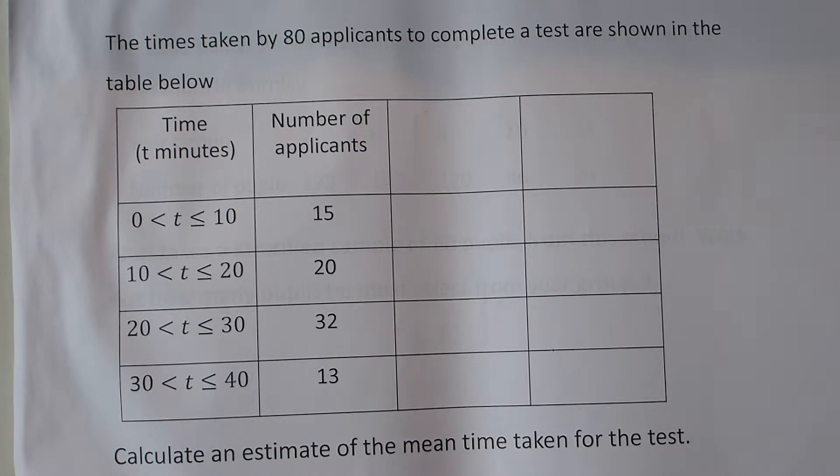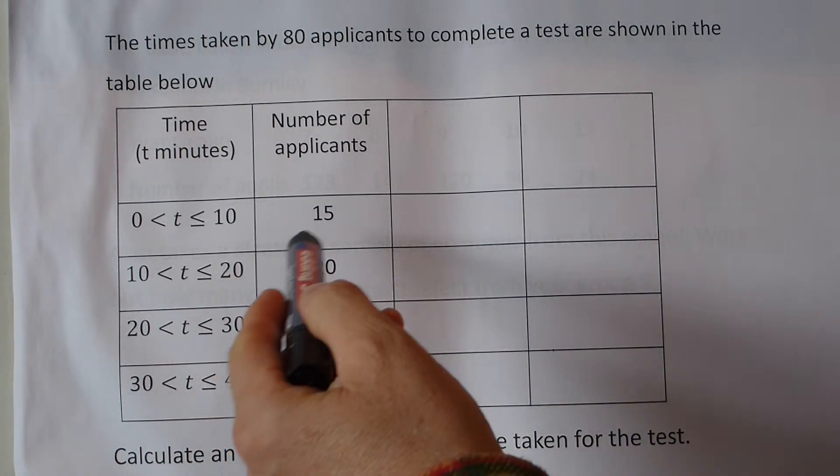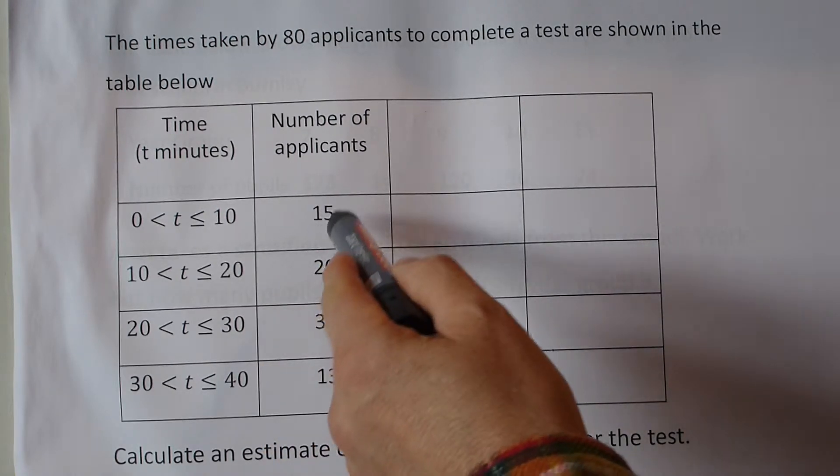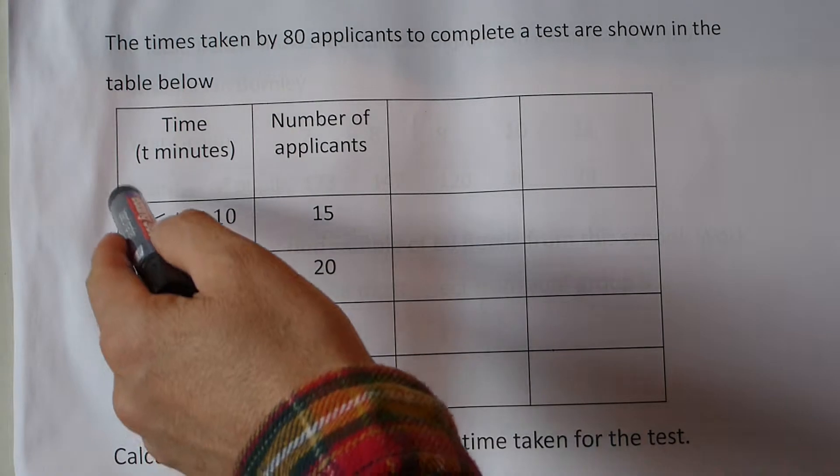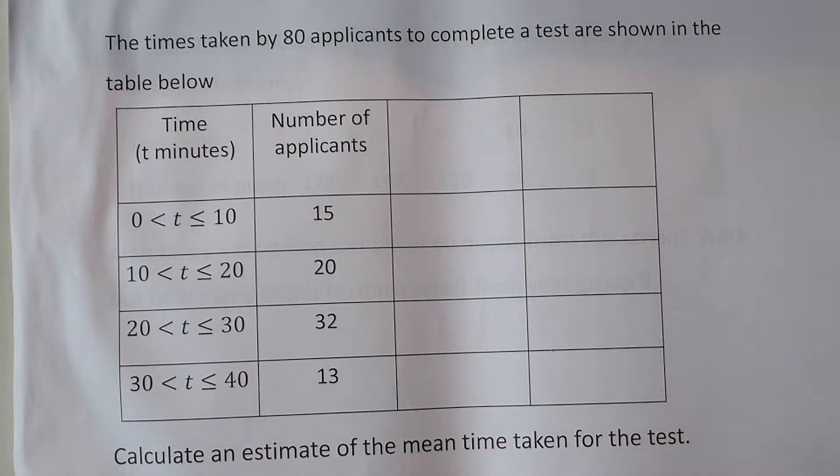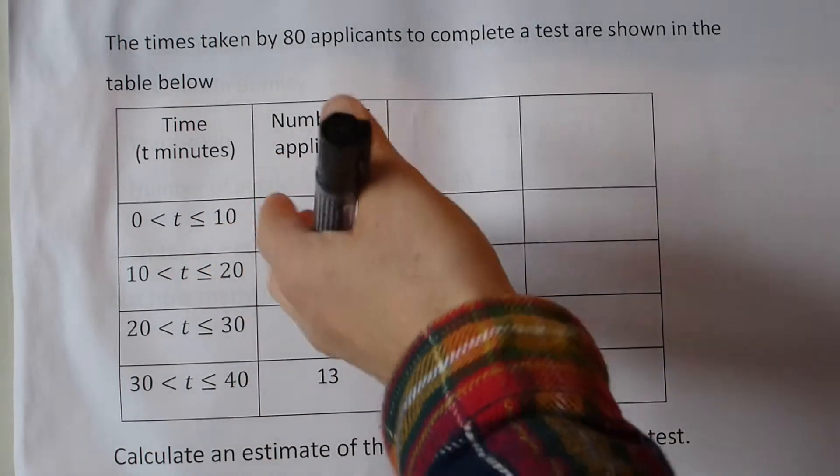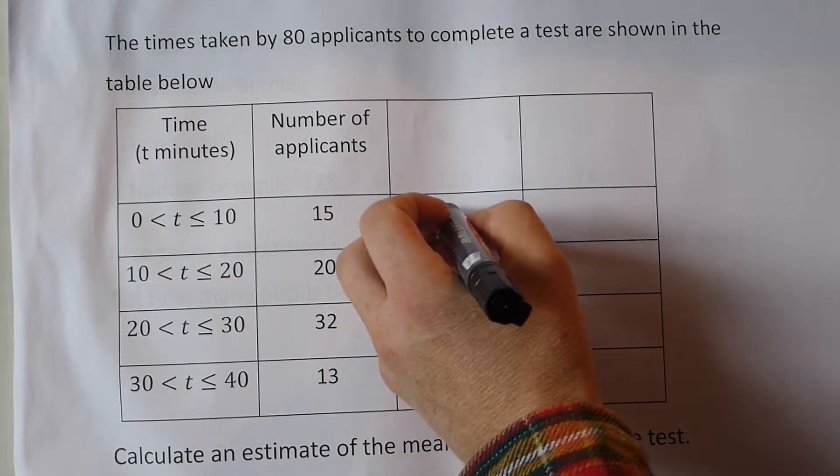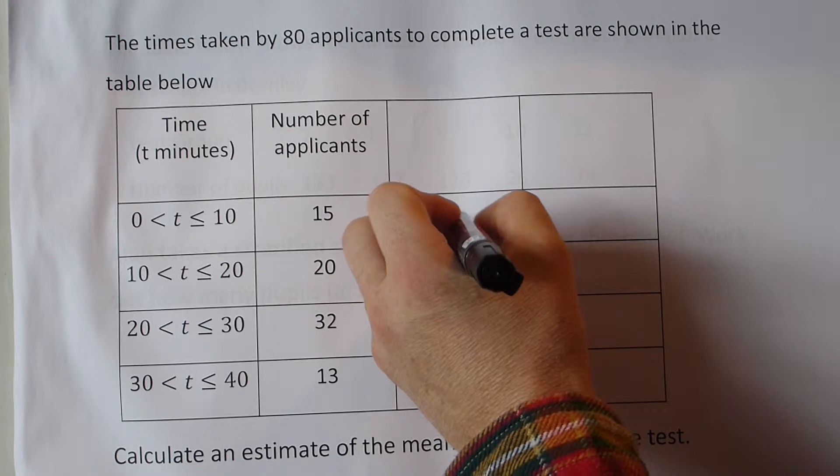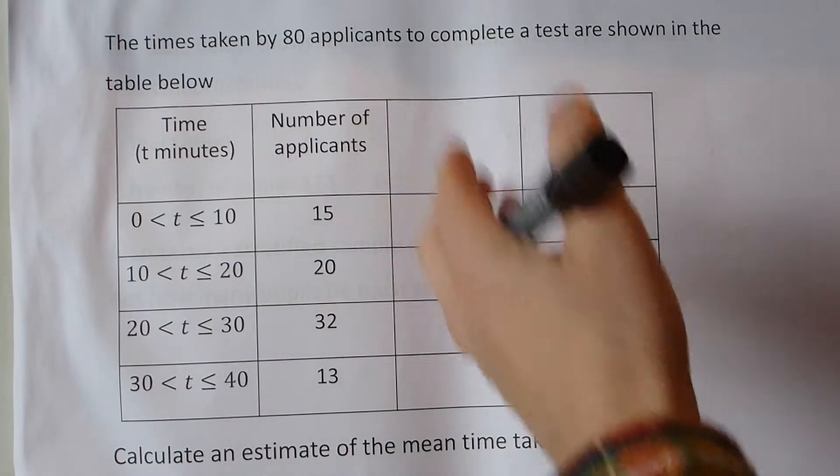A question like this, we can only estimate the mean because we don't know exactly how long these applicants took. We know that 15 took between 0 and 10 minutes, but we don't know exactly what they took. So we're going to estimate that they take on average 5 minutes. Some will be below 5 minutes, some will be above 5 minutes, but we're going to estimate that on average it will be 5 minutes.